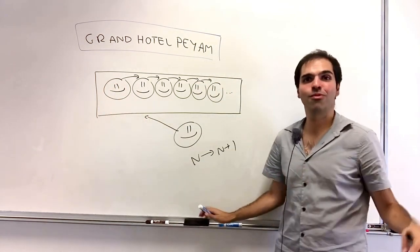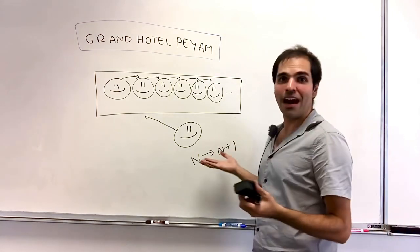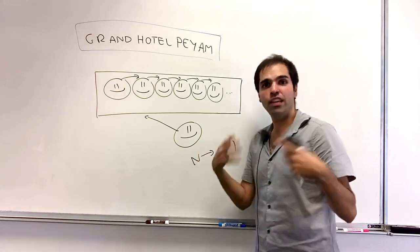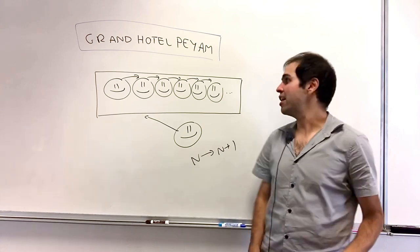And thereby it's still fully booked out, yet you made some profit. And mathematically, by the way, it shows that if you have a countably infinite set and you're adding another element, it's still countably infinite.